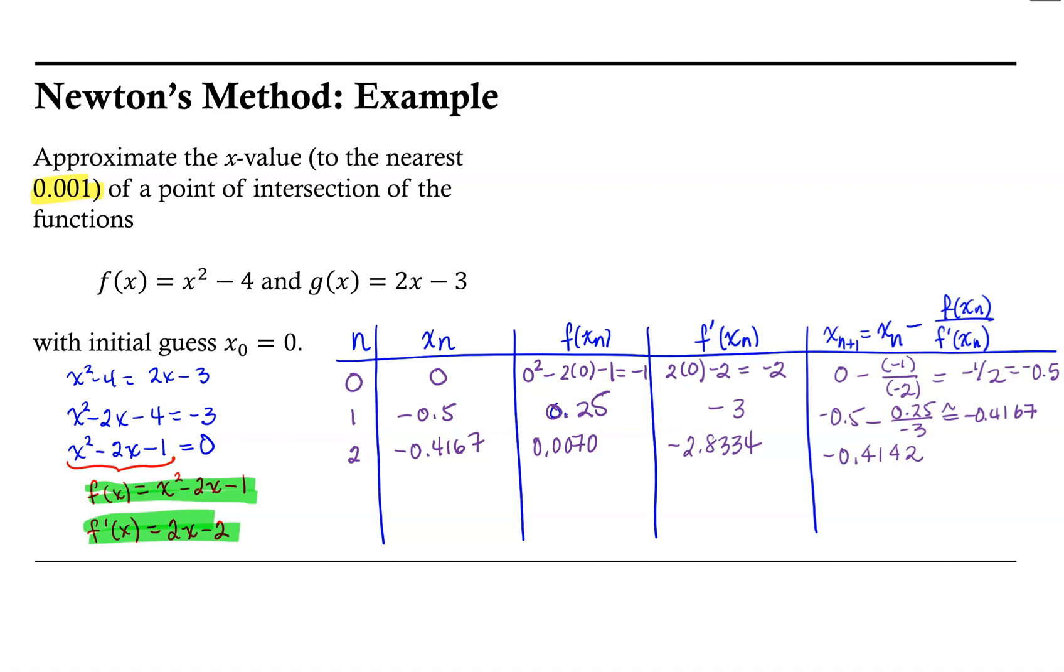This becomes our x₃. So we have -0.4142. And notice that right now, two of our decimal places agree between x₂ and x₃. So it may be the case that this is the last iteration that we need to go through to get the desired precision.